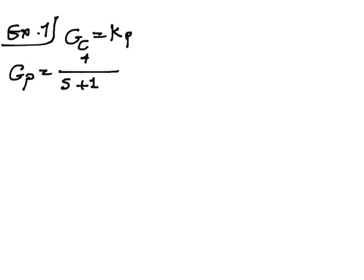Hello everybody. In this session of the class, we will see how to draw the root locus for different examples. In the first example, we have a first-order system. Gp is equal to 1 over s plus 1, so we have one pole at minus 1. The controller Gc is set to be equal to Kp, and we want to draw the root locus for this simple system.